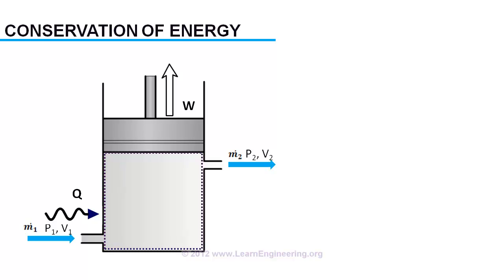Here you can see there are four energy interactions to the system in total. Two energy interactions coming to the system and two leaving the system. For an open system, rate of increase of energy will be: heat absorbed minus work done plus energy transfer due to the incoming stream minus energy transfer due to the outgoing stream.